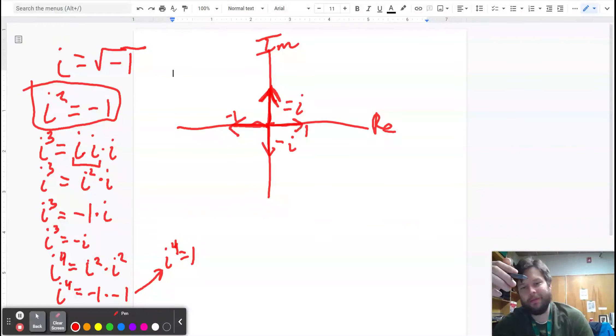If you continue this pattern, you'll see that i to the fifth is just equal to i again. i to the sixth is equal to negative one. i to the seventh is equal to negative i. i to the eighth is equal to one. You can rotate around as many times as you want. I could ask you some crazy questions like, what is i to the hundredths? And you'd be able to answer, it's just equal to one. Because i to the hundredths is just a bunch of i to the fourths 25 times. That's just full rotation. It's just spinning around the circle. Nothing to it.